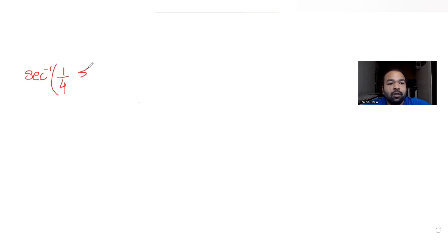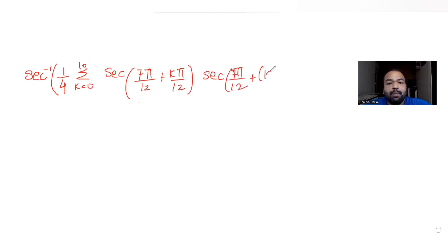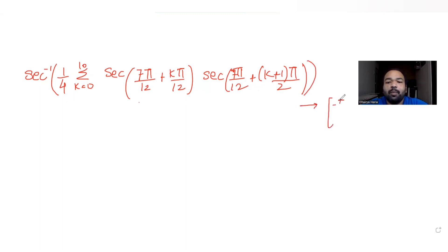Hi guys, let's see today's question. Today's question is asking us to find the value of sec inverse of 1/4 times a summation where k goes from 0 to 10, of sec(7π/12 + kπ/2) times sec(7π/12 + (k+1)π/2), and we need to find the value in the interval of -π/4 to 3π/4.